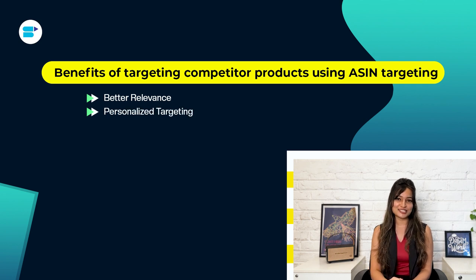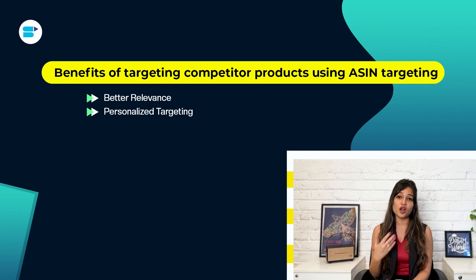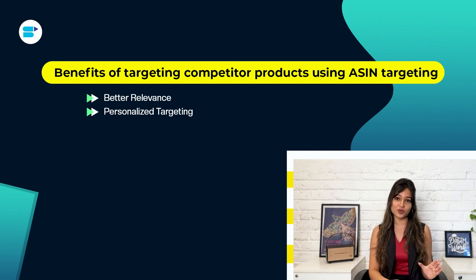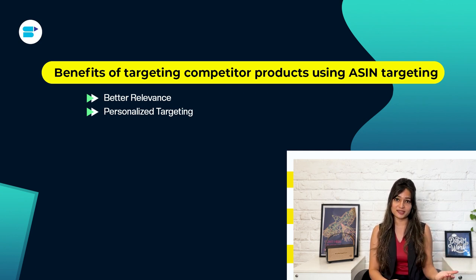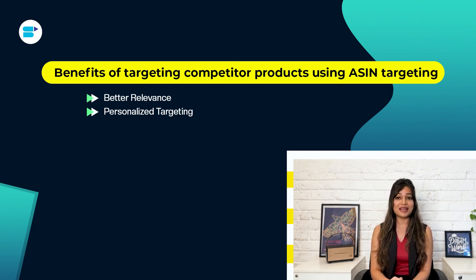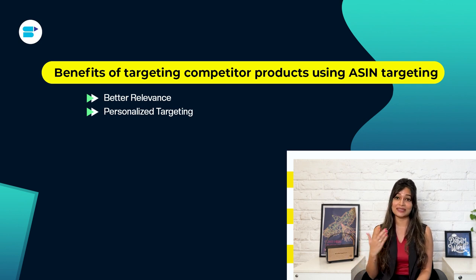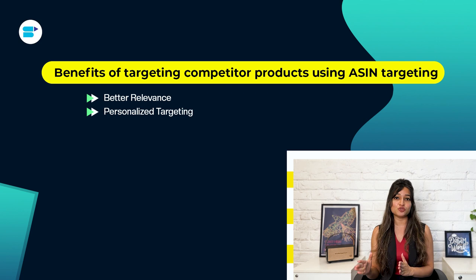Second is personalized targeting. Amazon product targeting allows you to reach not only people searching for products like yours, but also those with specific interests and characteristics that match your target audience. This is called psychographic segmentation. By tailoring your ads to match these unique interests and characteristics, you can increase engagement, clicks, and ultimately sales.